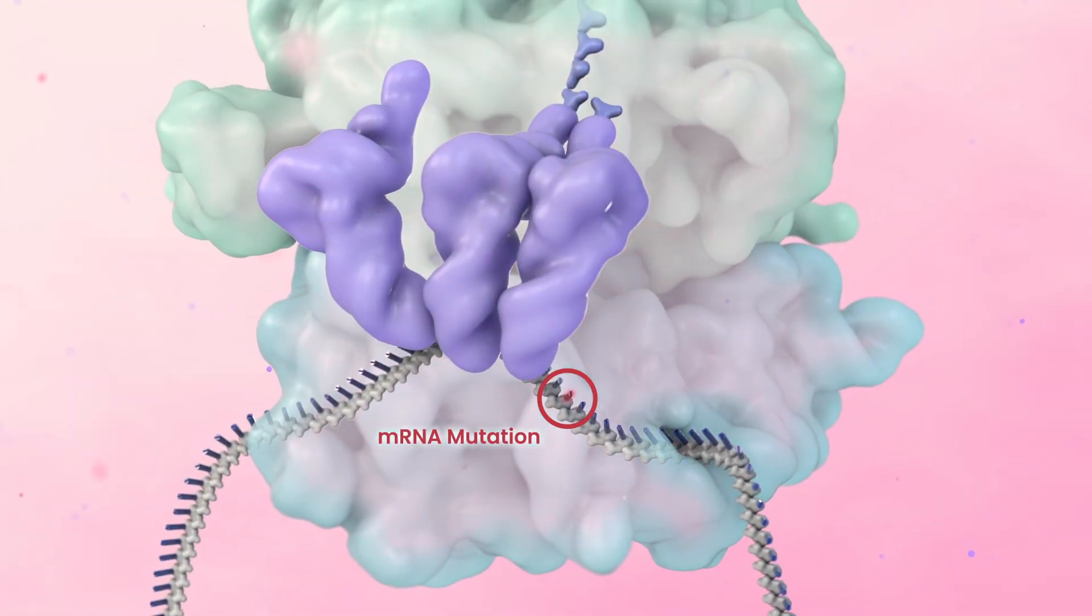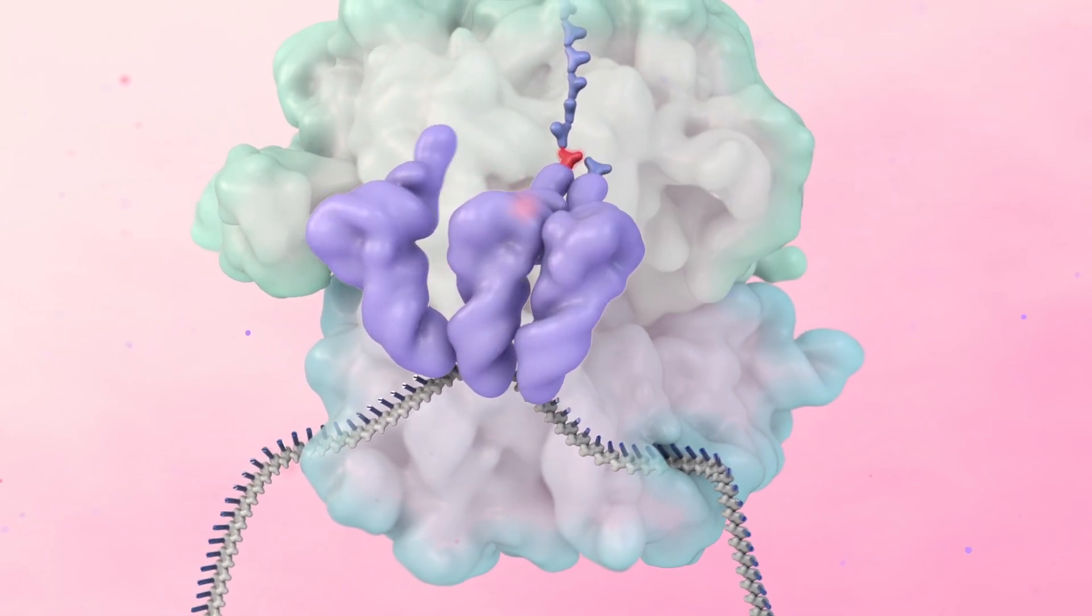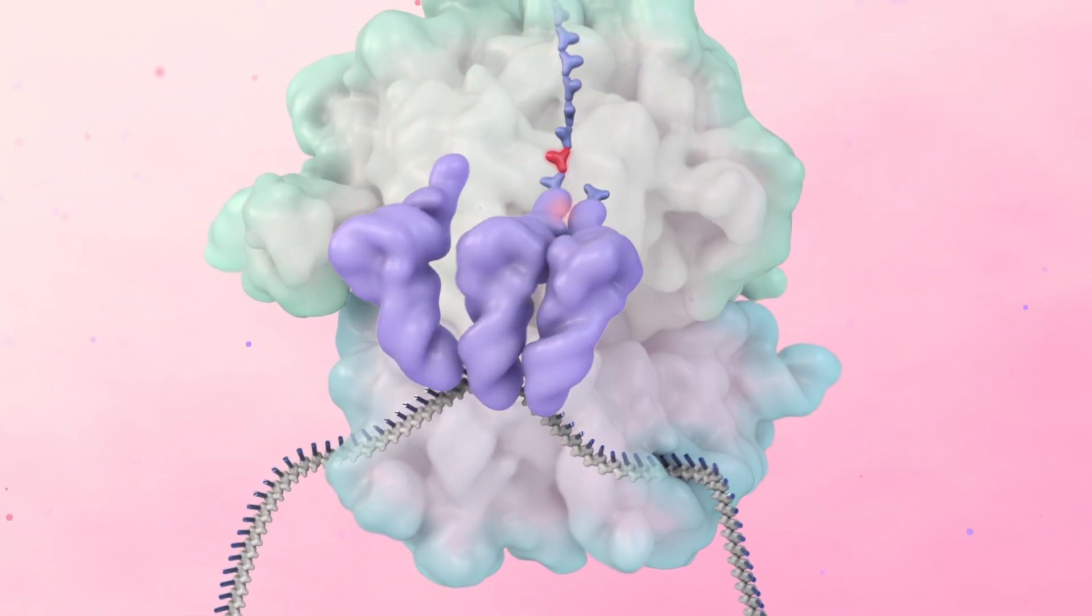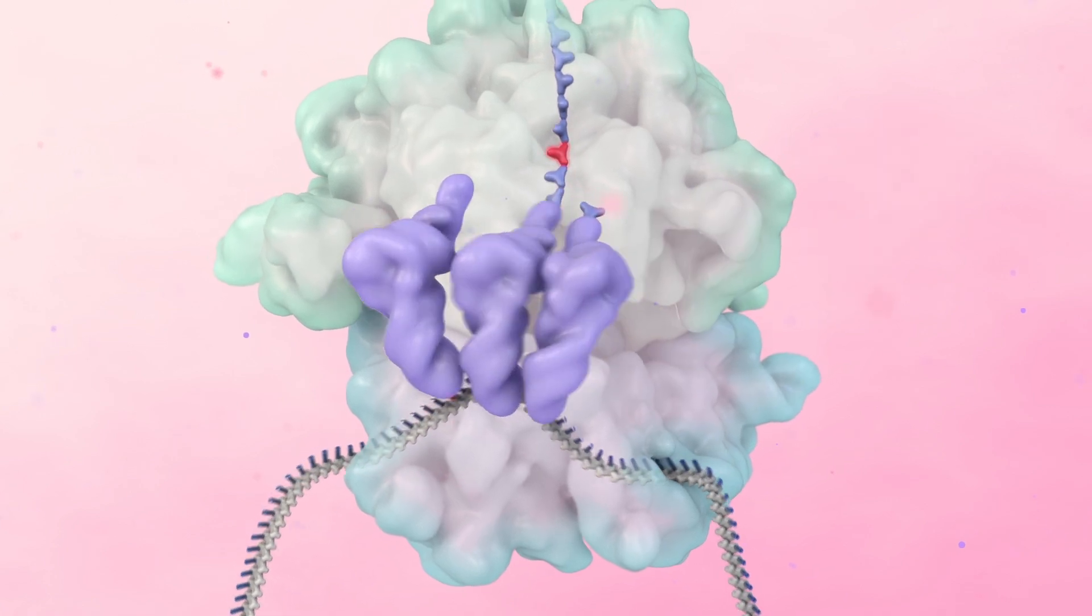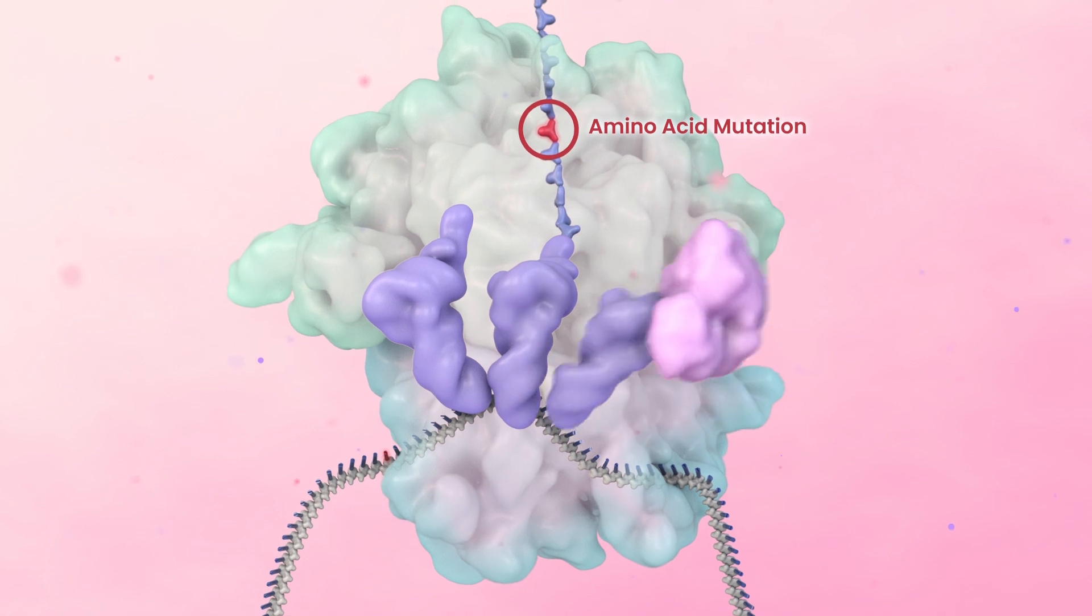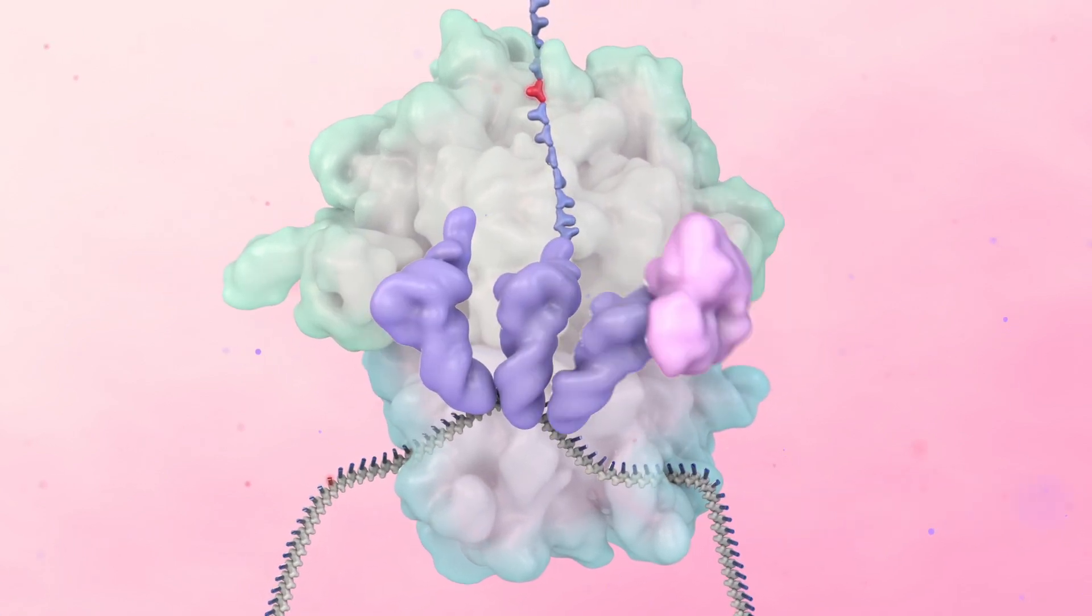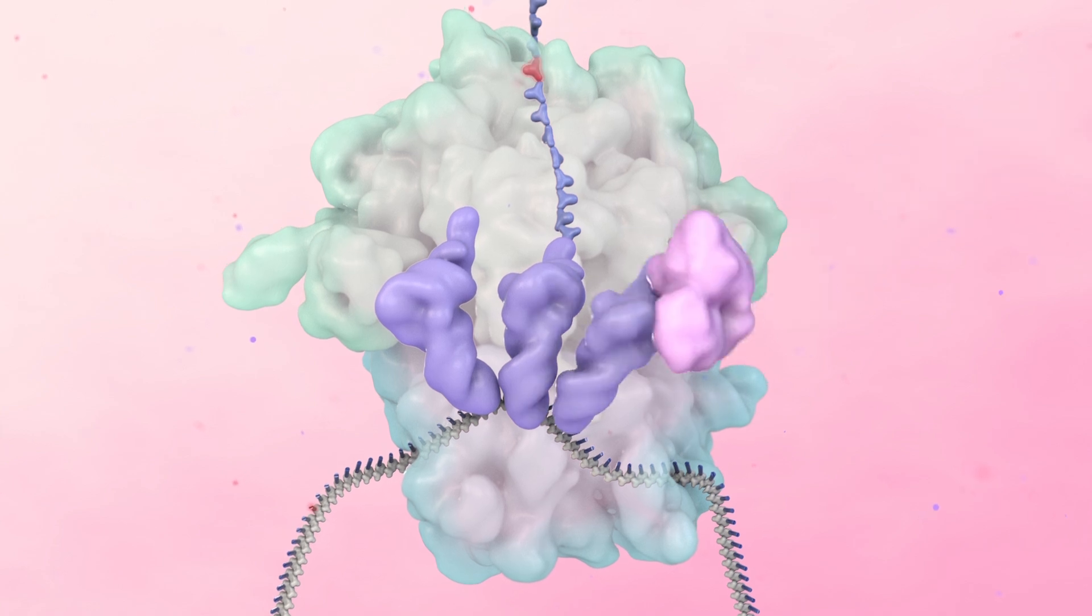This mRNA is translated into protein by the ribosome. At the position of the RNA mutation, the ribosome incorporates an amino acid that is not typically present at that position of the protein. As a result, a mutant protein is made.